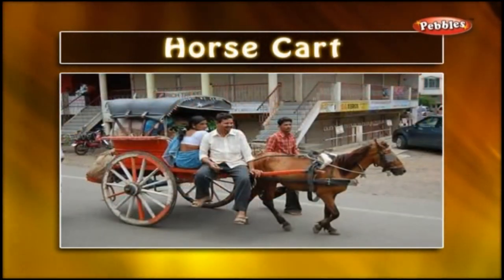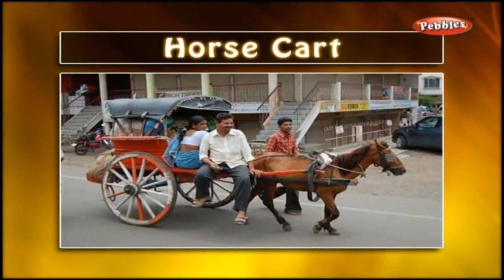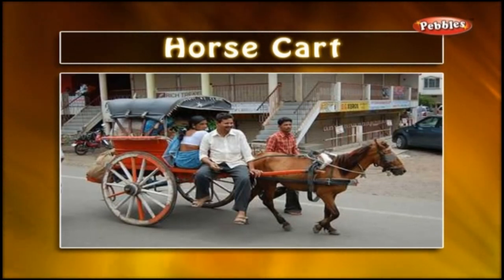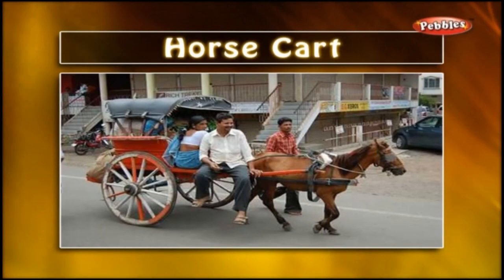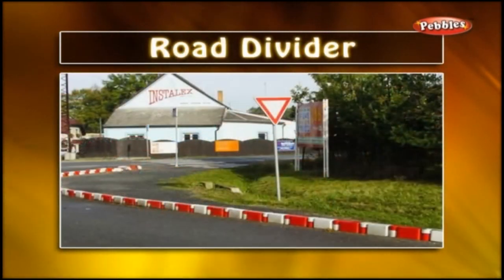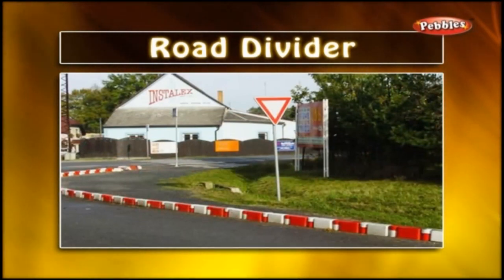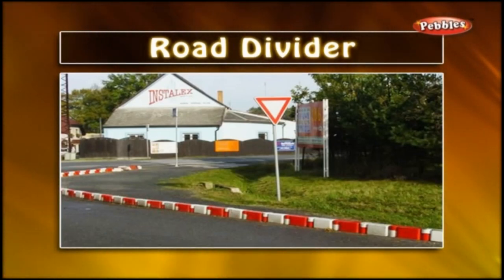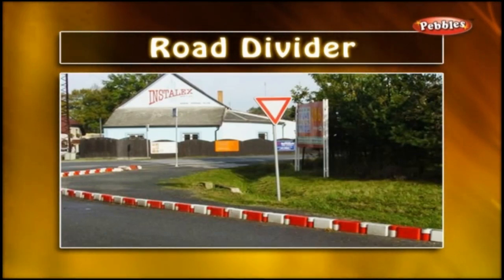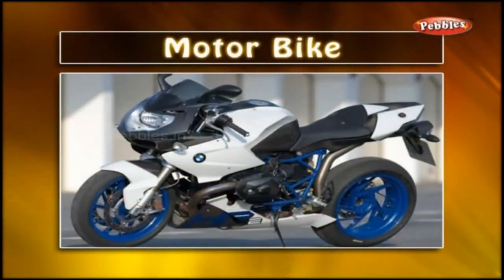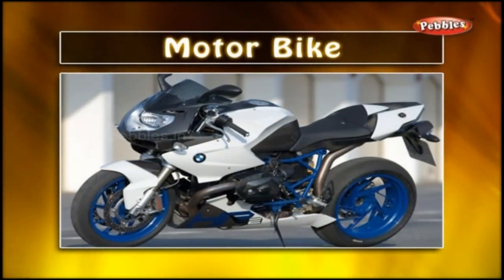Horse Cart: This cart is pulled by a horse. There can be one, two or more horses attached as per the size of the cart. Kids love to ride the horse cart very much. Road Divider: Stones or railings are installed at the center of the road to bifurcate the traffic. Plastic objects or iron railings are also used as road dividers. Motorbike: A motorbike is a two-wheeler machine-operated vehicle.